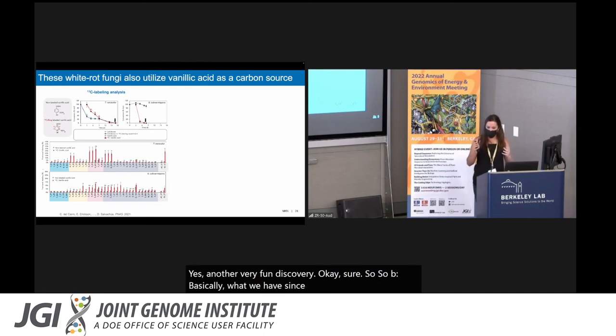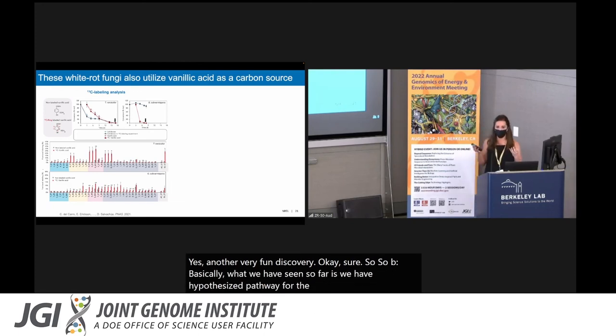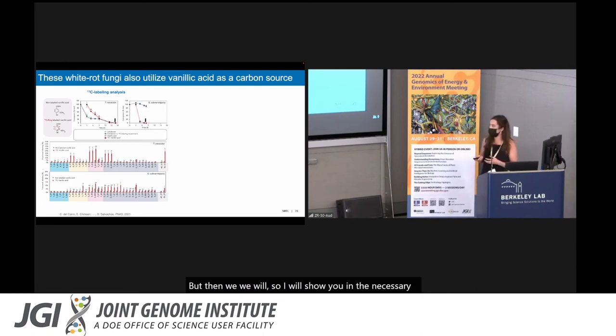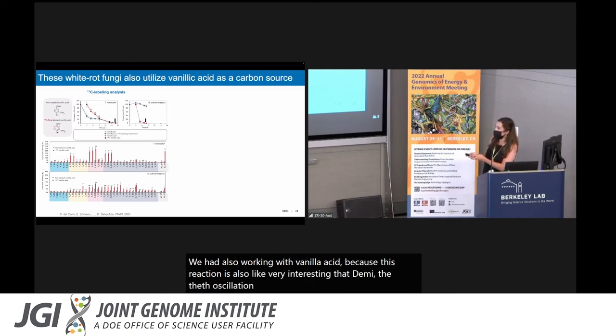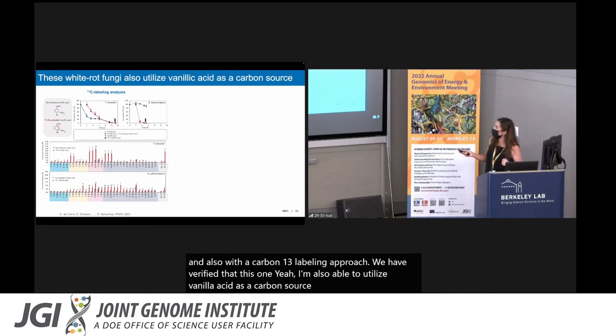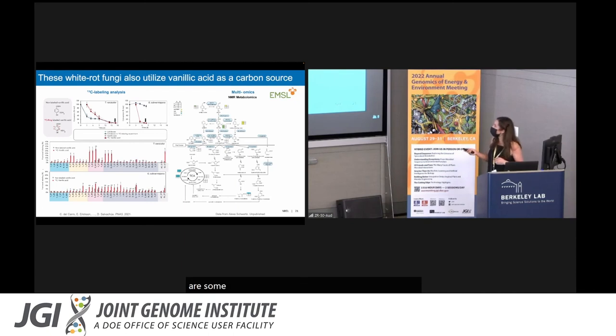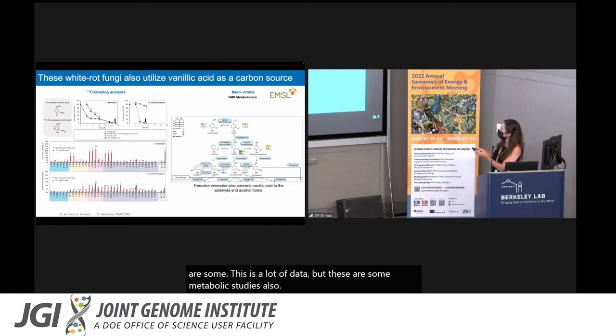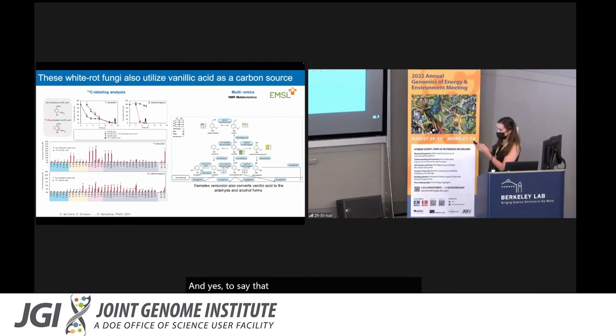Basically what we have seen so far is we have hypothesized a pathway for utilization of 4-hydroxybenzoic acid. I will show you in the next slide how we are validating that. This is some work that we have ongoing in the lab. We are also working with vanillic acid, because this reaction is also very interesting, the demethoxylation. We are trying to understand how that happens. Also, with a carbon-13 labeling approach, we have verified that these fungi are also able to utilize vanillic acid as a carbon source. This is a lot of data, but these are some metabolomic studies, also NMR metabolomics from EMSL. Just to say that we have found a similar result than before. With Trametes, we have also seen that vanillate is being reduced to vanillin and vanillyl alcohol. Basically, this information is telling us that even within white rot fungi, the metabolism of aromatic compounds may be different.